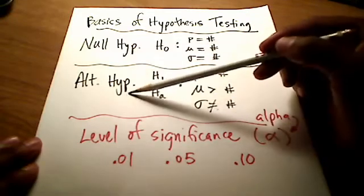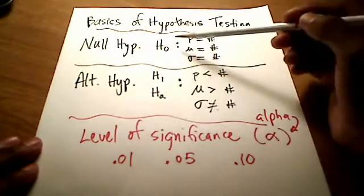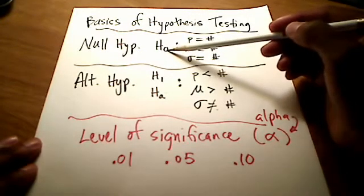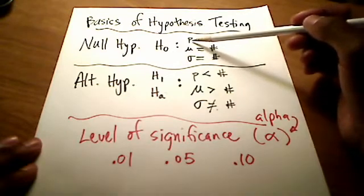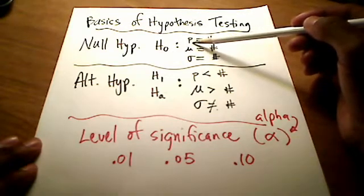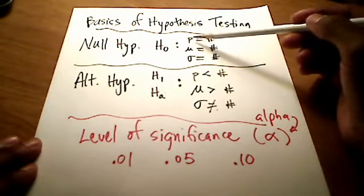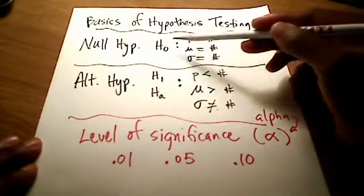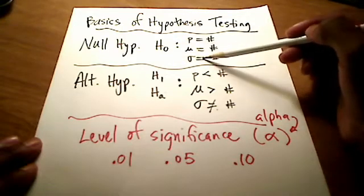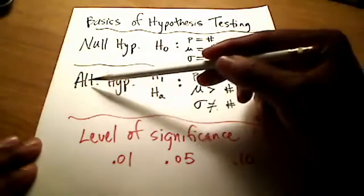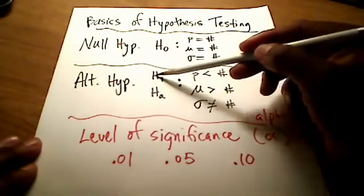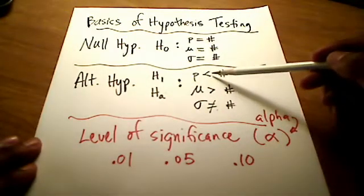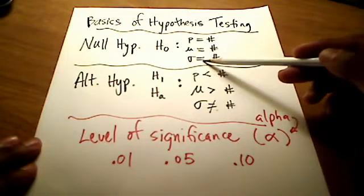There's the null hypothesis and there's the alternative hypothesis. Almost every book I've used uses H sub-zero, or H naught, as the null hypothesis. And no matter what parameter you're talking about — whether it's a proportion, a mean, or a standard deviation — the null hypothesis always uses an equal sign. The alternative hypothesis, maybe your book uses H sub-1 or H sub-A, always uses a symbol that is not an equal sign.